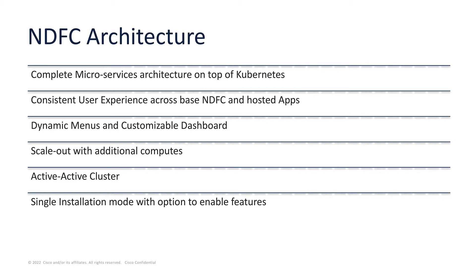Instead, we deploy a cluster of ND nodes. Once the cluster is up and running and ND is functional, at runtime we have a feature management capability that allows a user to selectively enable or disable features — which include fabric controller for LAN, SAN, IPFabric for media, and even fabric discovery. So once you install, you can select the features you'd like to run. This is very opposite to DCNM where you would first select the mode and then install, making it a lot more easy and flexible.